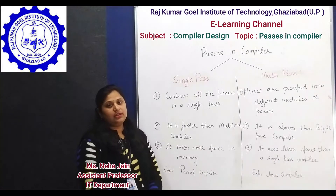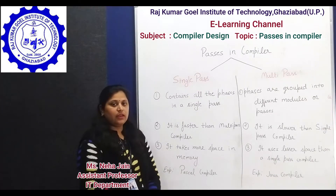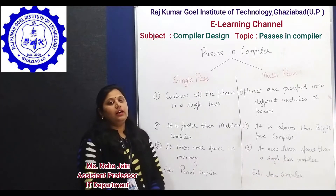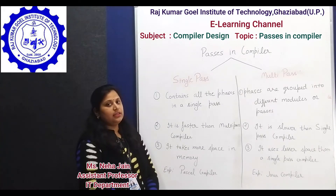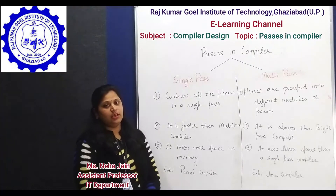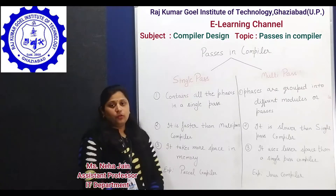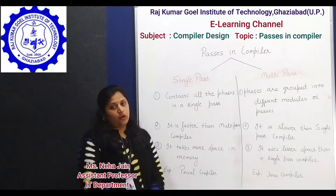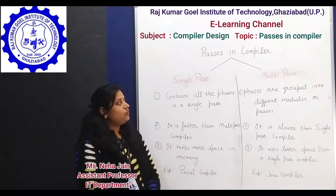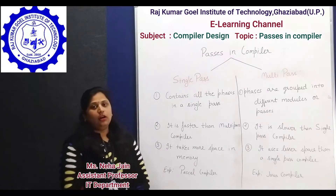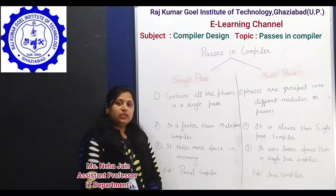the second is syntax analysis phase, then semantic analysis phase, intermediate code generator phase, code optimizer phase, and the last one is code generation phase. We can group these phases into modules, and these modules are called passes in the implementation of a compiler.